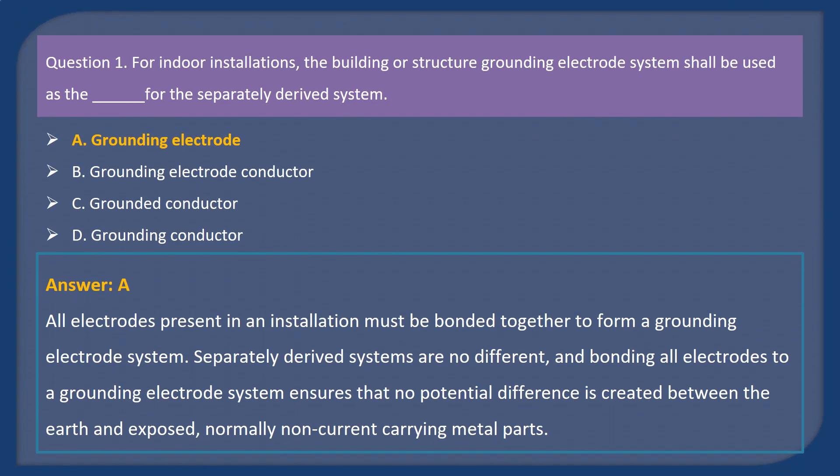Answer: A. All electrodes present in an installation must be bonded together to form a grounding electrode system. Separately derived systems are no different, and bonding all electrodes to a grounding electrode system ensures that no potential difference is created between the earth and exposed, normally non-current carrying metal parts.